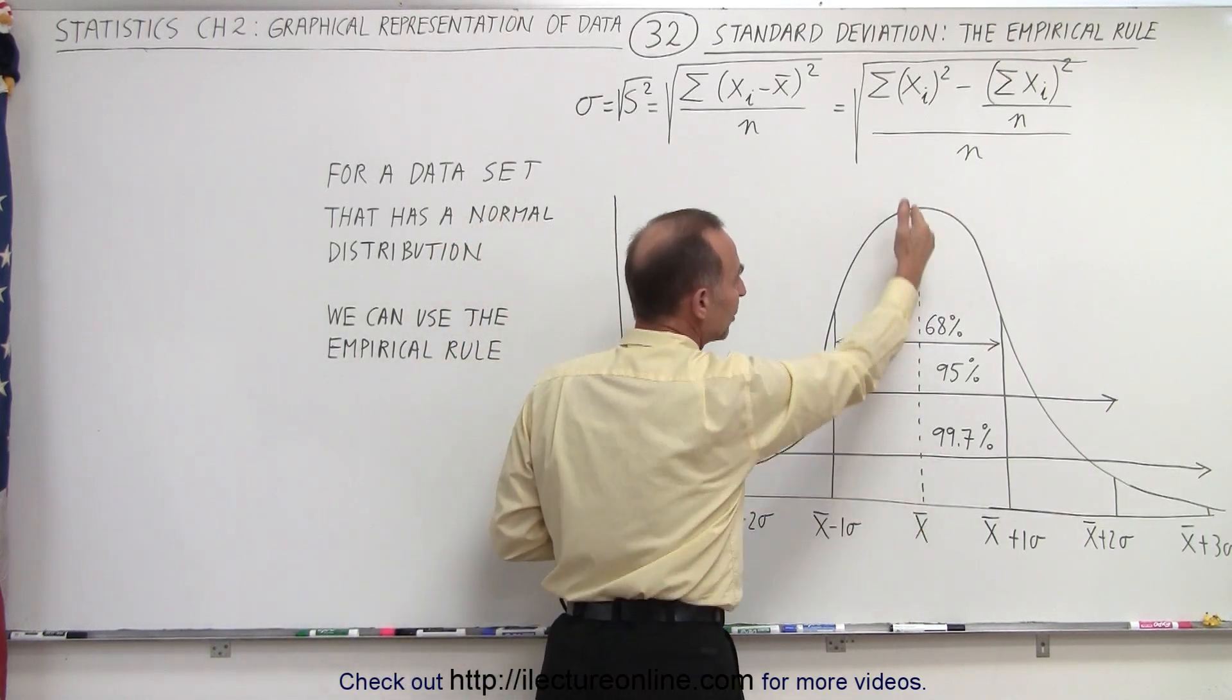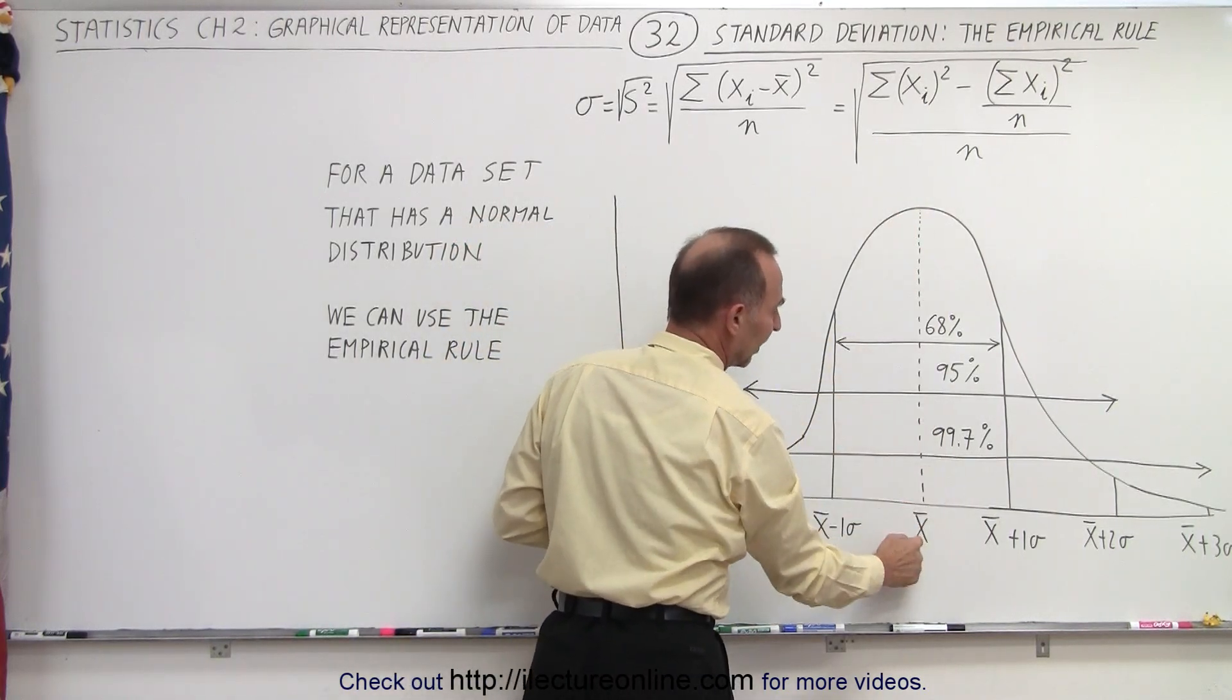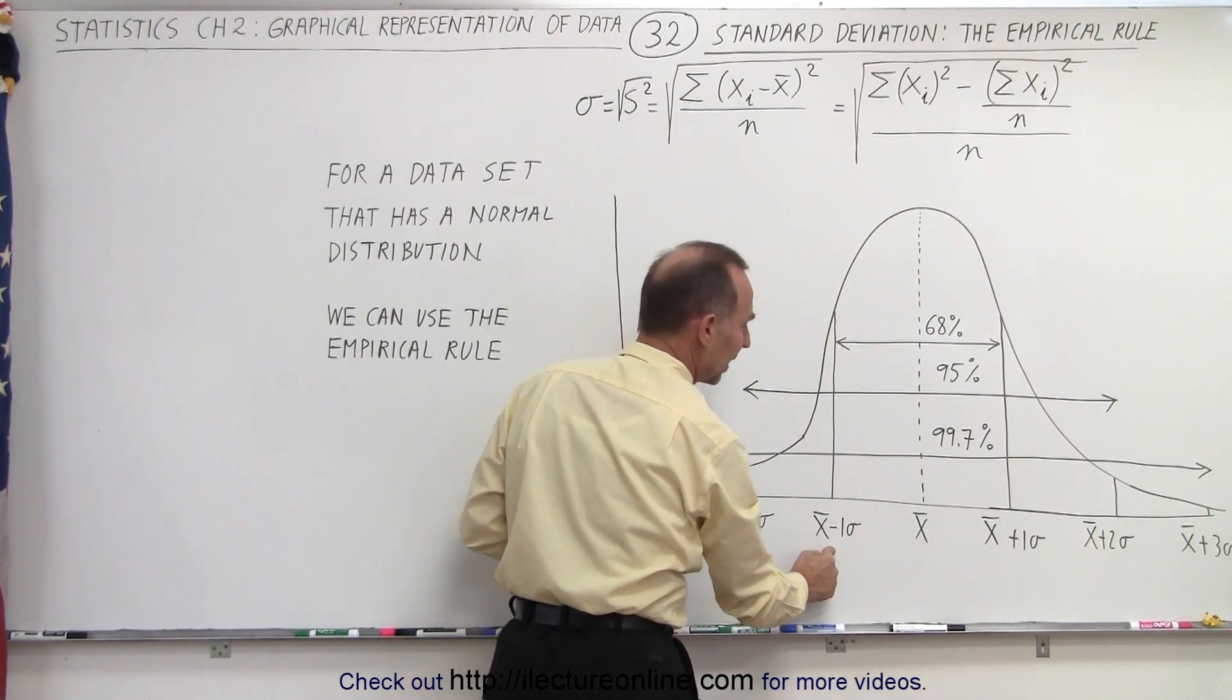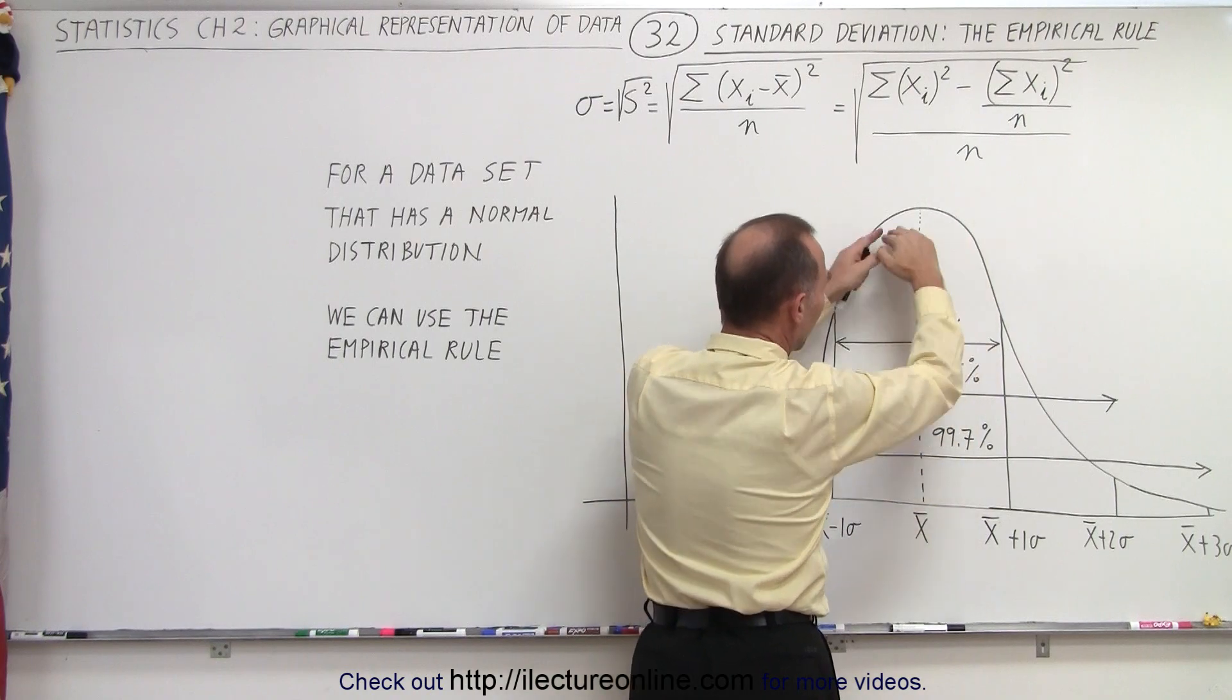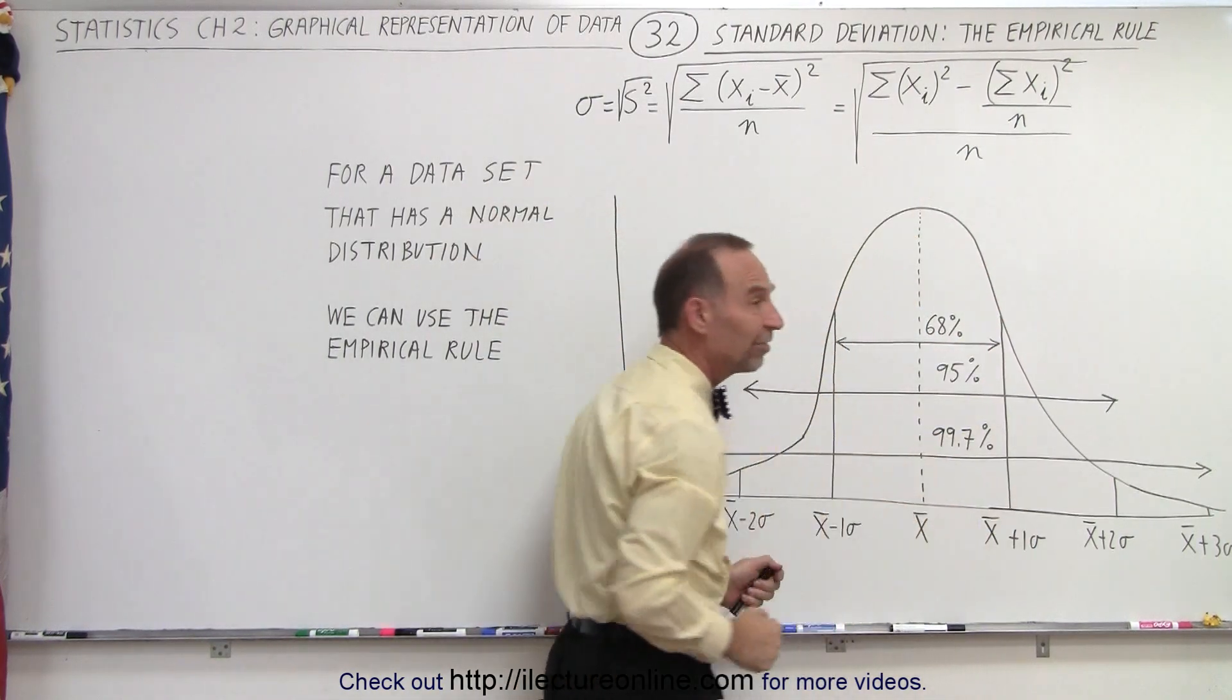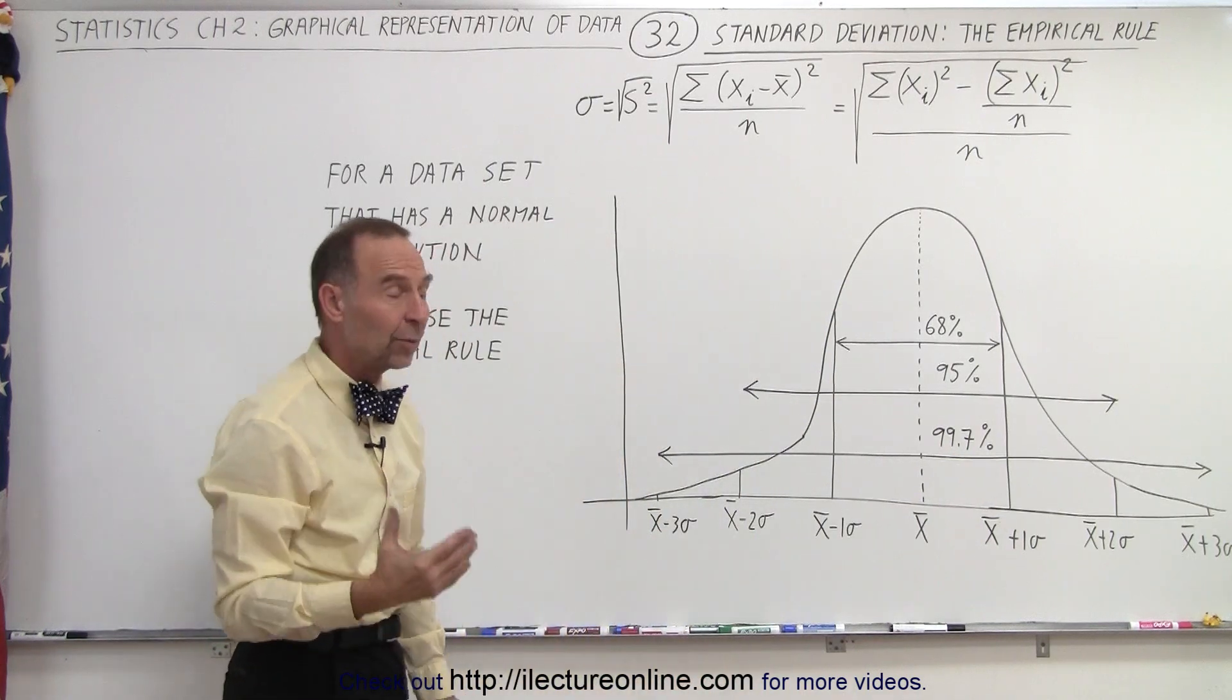And then if we find the mean or the average of our data set, and then we add one sigma to that average and subtract one sigma from that average, we know that about 68% of the entire data set will fall within plus or minus one sigma from the mean, and that's how we say it.